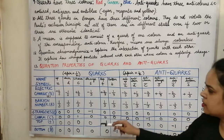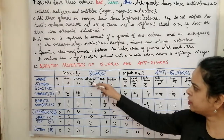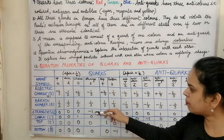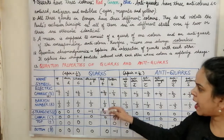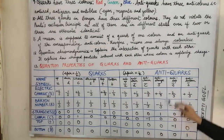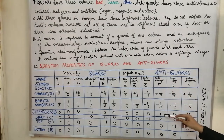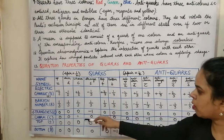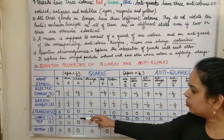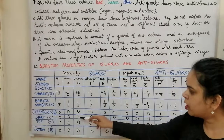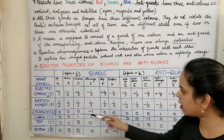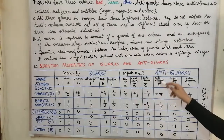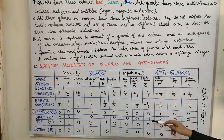For strangeness: the strange quark has a strangeness number of minus 1, while the anti-strange quark possesses a strangeness number of plus 1. All other quarks and anti-quarks have a strangeness number of zero. Charm is also a property: the charm quark possesses a charm number of one, the anti-charm possesses minus one, and all others have zero.